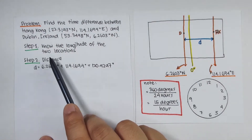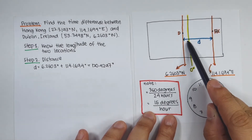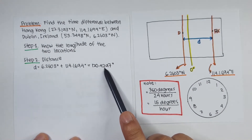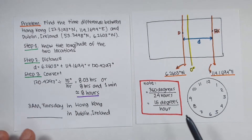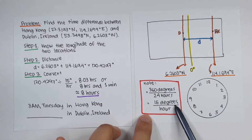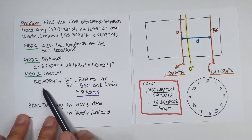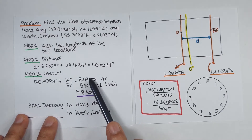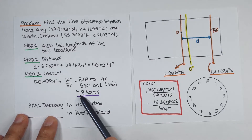Step number two: get their distance apart in terms of longitude. That is 6.260 degrees plus 114.1694 degrees, equal to 120.4297 degrees. Step number three: convert using 360 degrees divided by 24 hours, which is 15 degrees per hour. So 120.4297 divided by 15 gives 8.03 hours, approximately 8 hours.